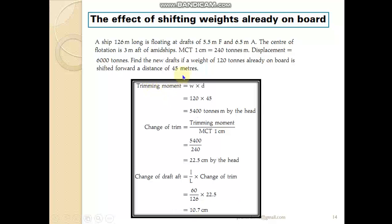We can calculate the trimming moment. The distance moved is 45 meters and the mass is 120 tons. The trimming moment is W × d = 120 × 45 = 5400 ton-meters. This moment will be by head — by forward — because you are shifting a mass forward. That means the trim is going to change by head, meaning your forward draft is going to increase. So the trimming moment is 5400 ton-meters by head.